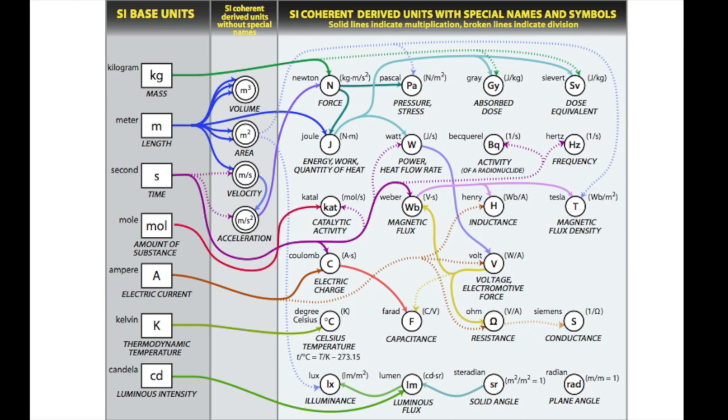All right, and next up we also have a few units that don't have any special terminology to them. Those are called the coherent-derived units without any special names. For instance, we have here the volume, which can be measured in cubic meters. We'll also be seeing volumes in terms of liters later on, but we'll see the relation between those. Area can be measured in square meters, velocity can be measured in meters per second, and acceleration can be measured in meters per second squared, although we don't really use that too much in chemistry.